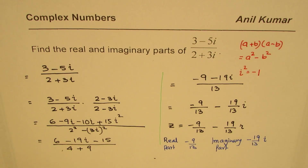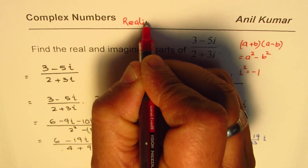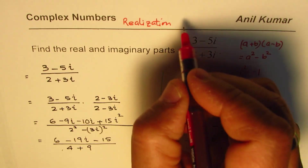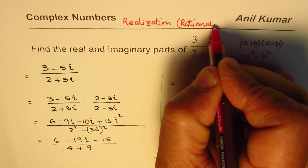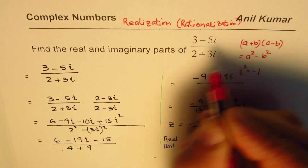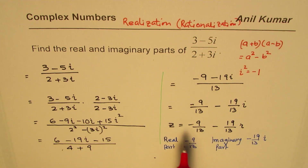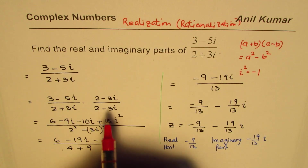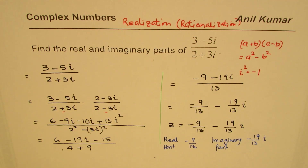This process is called realization. It is very similar to rationalization, which you learn in real numbers. Here, we use the conjugate of the denominator to make the denominator real, and that helps us separate the real and imaginary parts from such expressions.